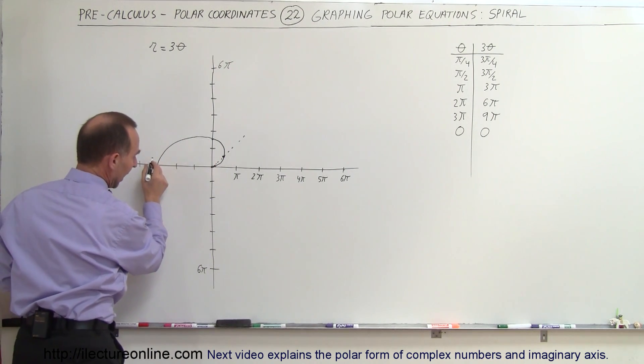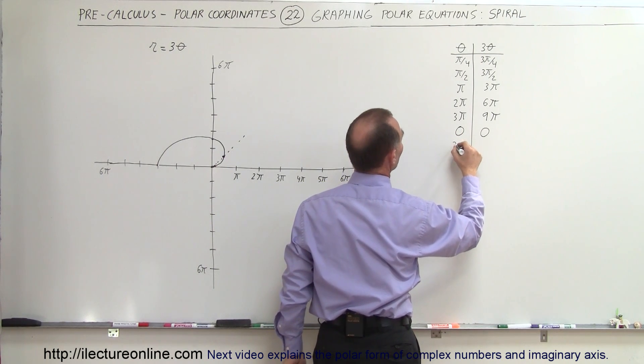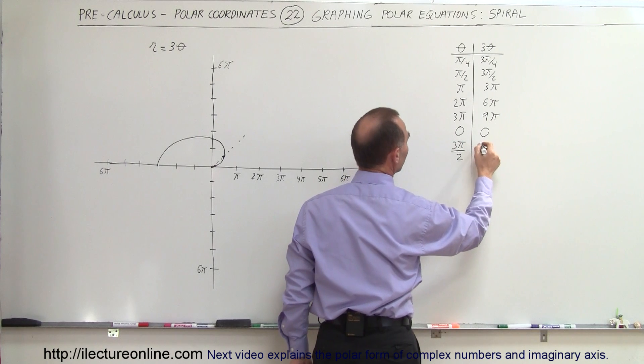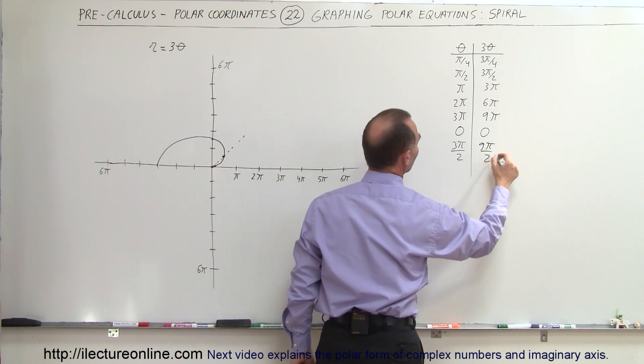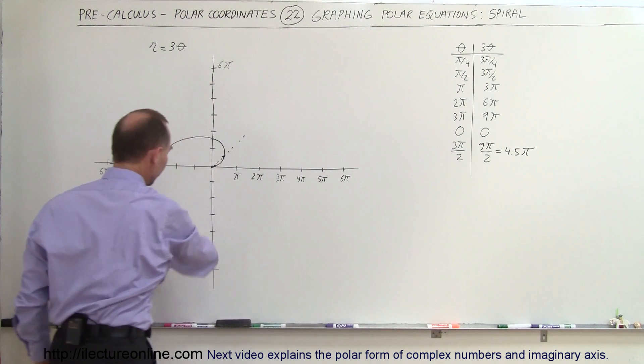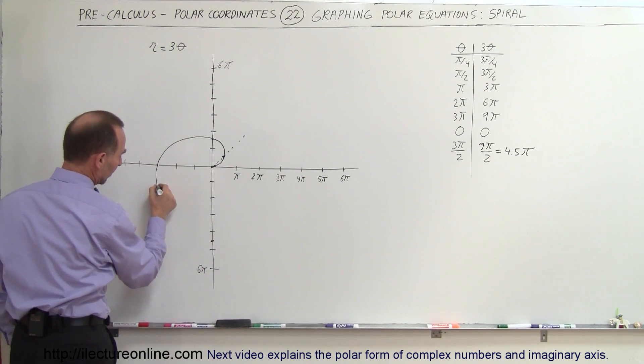So you can see that, well, we'll put one value in between. What if we have 3π over 2? That's 1 and a half π. Multiply times 3, that would be 9π over 2, which is equal to 4.5π, which means that at an angle of 270 degrees, r would be equal to this point right there. So continue onward.